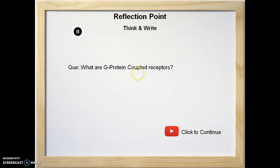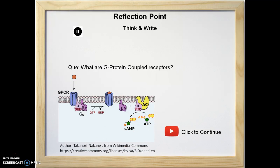Since adrenergic receptors are G-protein coupled receptors, you can pause here, think, and write what G-protein coupled receptors are. G-protein coupled receptors, GPCRs, are 7-transmembrane domain receptors which are linked to a G-protein inside the cell. G-protein is a guanine nucleotide binding protein which, after its activation, is responsible for initiating several biochemical reactions that lead to a biological response.